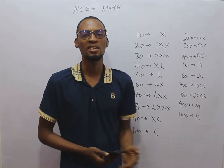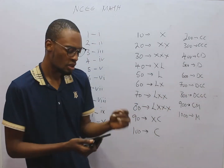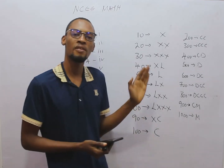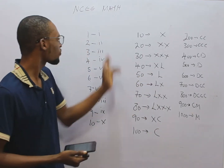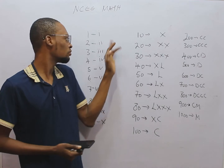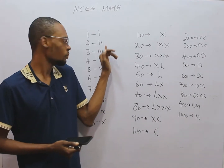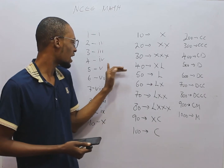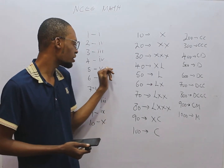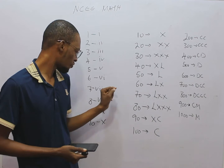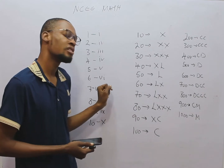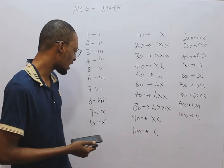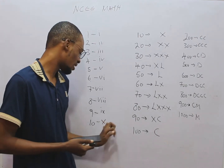Before we answer this question, let's simply see the Roman figures you need. One is I, two is II, three is III, four is IV, five is V, six is VI, seven is VII, eight is VIII, nine is IX.